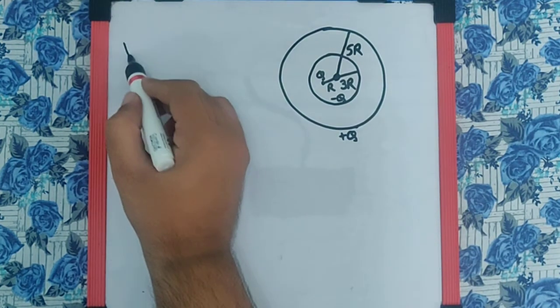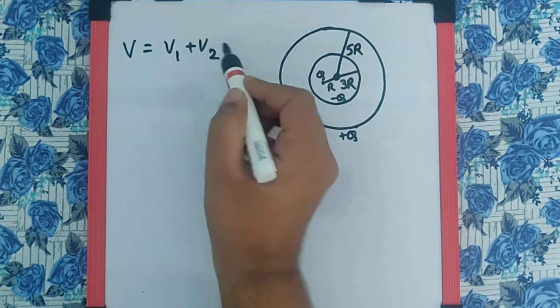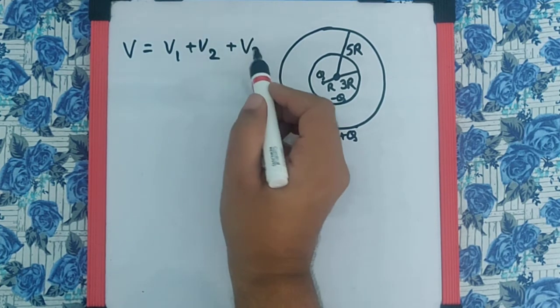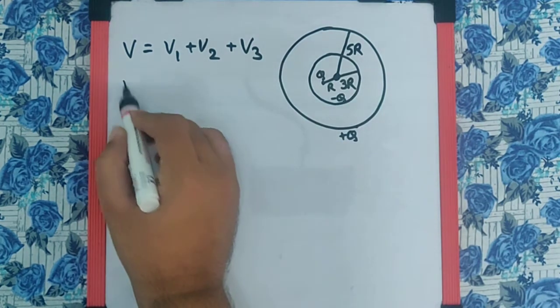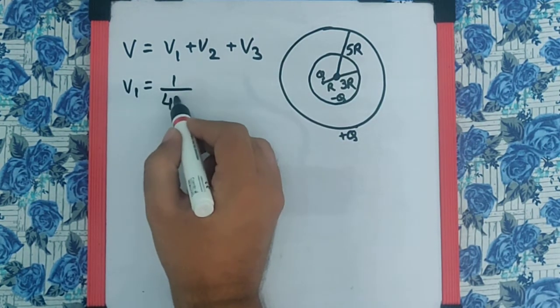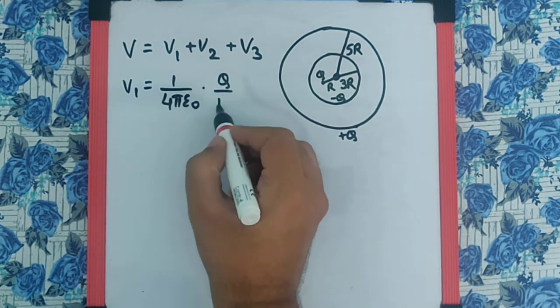And therefore, there are three potentials, V as V1 plus V2 plus V3. V1 is due to this point charge and that will be 1 upon 4pi epsilon 0, q by r.